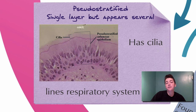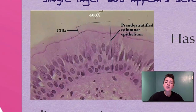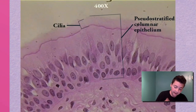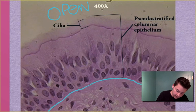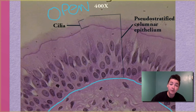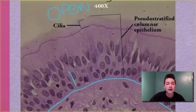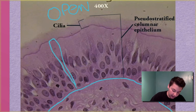Then we have pseudostratified. Pseudo means pretend, and stratified means many layers, so this is a single layer of cells but it appears to be several. When we look at pseudostratified, we find our open space and our basement membrane. Because there are nuclei at different levels, it seems to be more than one layer, but the nuclei are actually staggered — this is one cell coming down here, and here is another single cell.